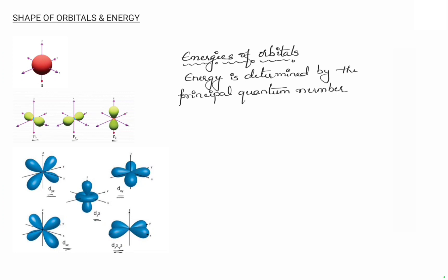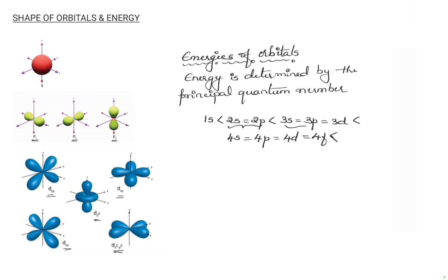For a hydrogen atom, energy is determined by the principal quantum number. The increasing order of energy is: 1s < 2s = 2p < 3s = 3p = 3d < 4s = 4p = 4d = 4f. For n=2, the s and p orbitals have the same energy; for n=3, s, p, and d orbitals have the same energy. These sets of orbitals with equal energy are called degenerate.